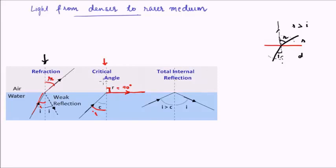Let us think about what will happen if we increase the angle of incidence any further. Since we have already reached the maximum of angle of refraction, r cannot be more than 90 degrees — because that would mean the light is being refracted back into the same medium. Hence, beyond this critical angle, instead of refraction, a new phenomenon will occur and that is known as total internal reflection.